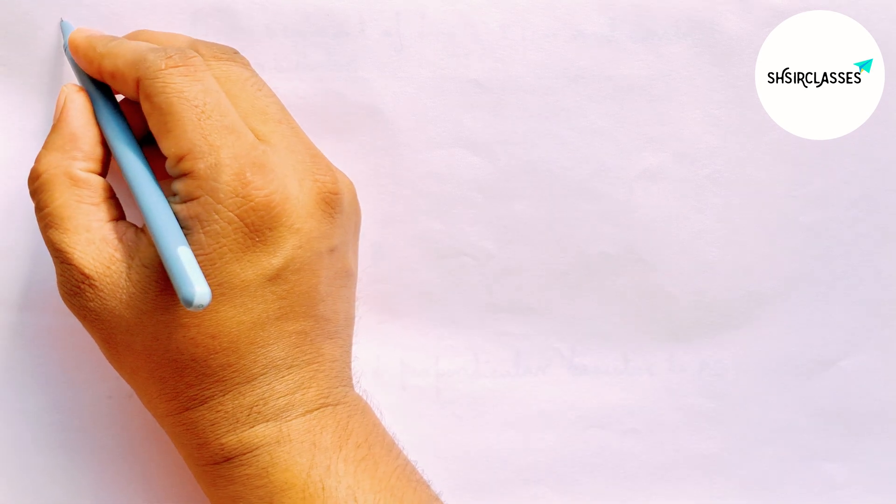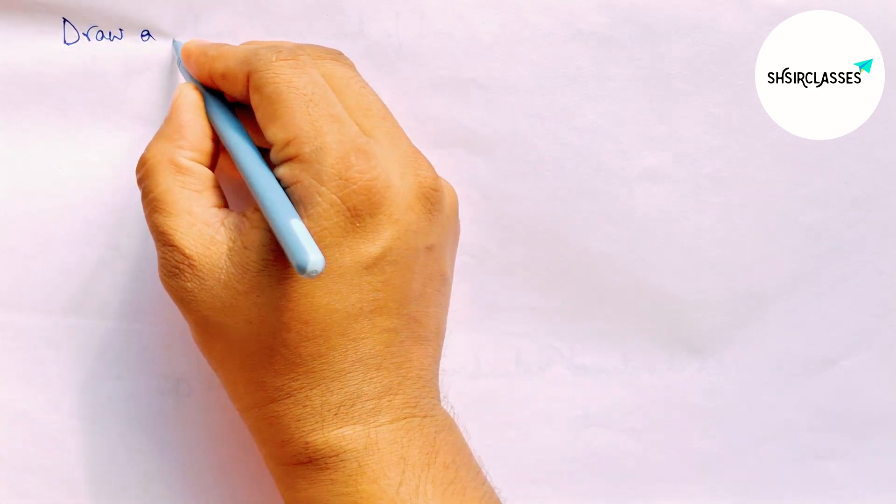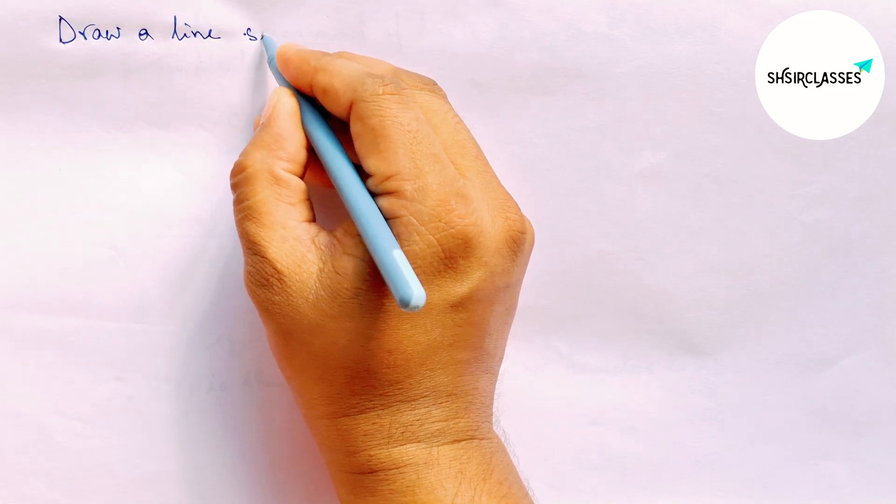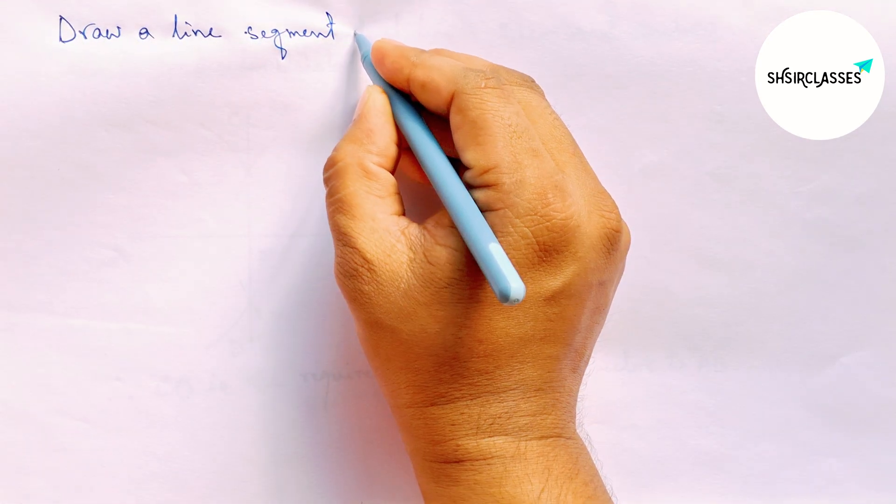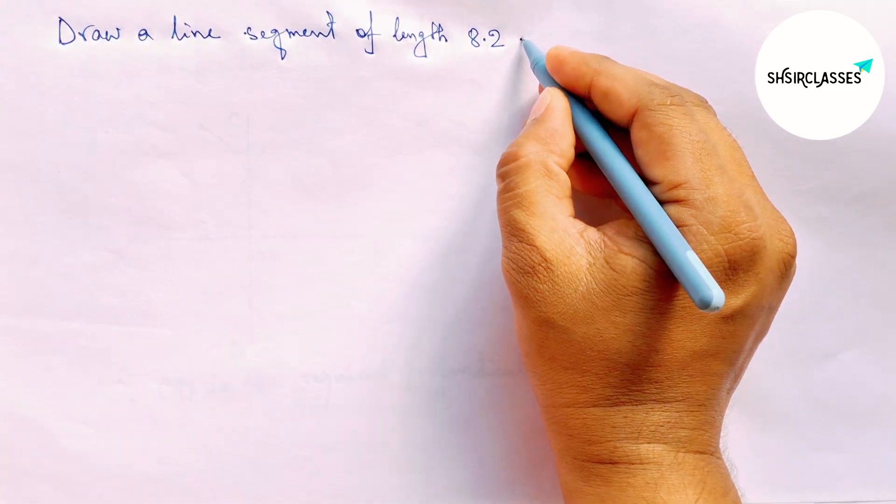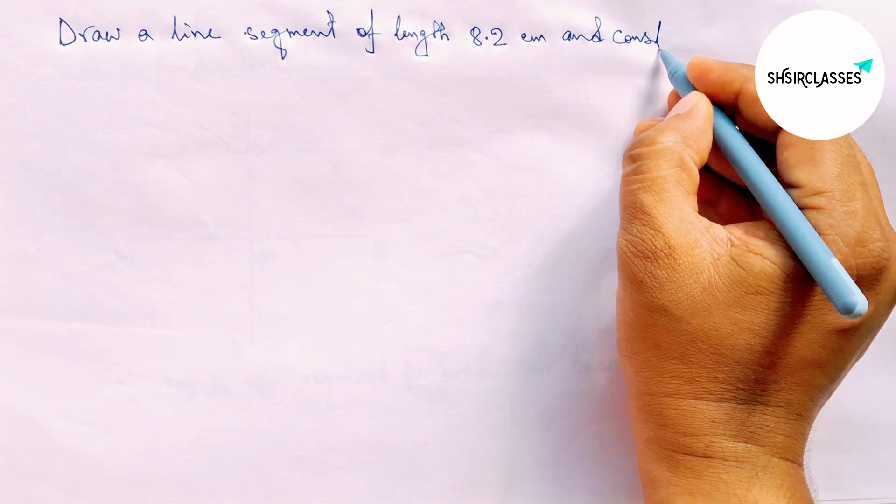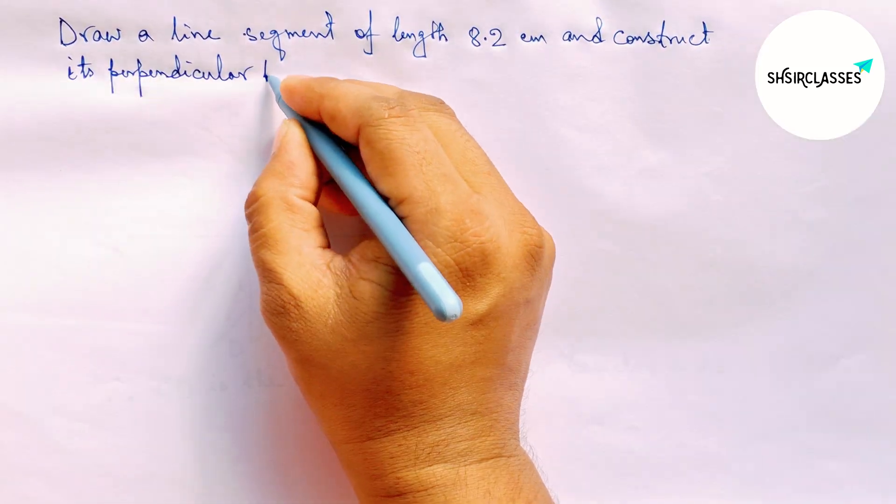Hi everyone, welcome to SH Share Classes. Today in this video, we'll draw a line segment of length 8.2 centimeters and construct its perpendicular bisector in an easy way. Please watch the video till the end.